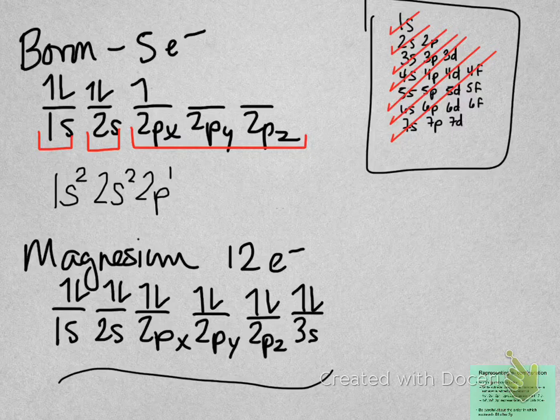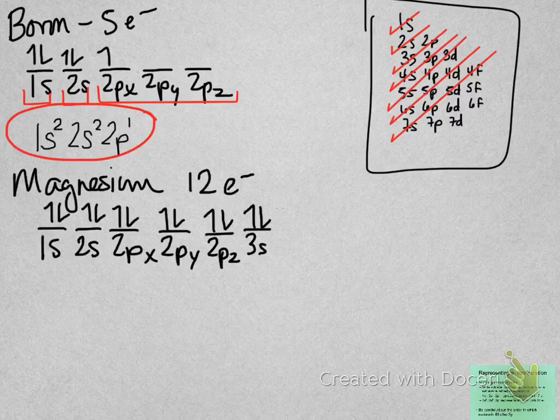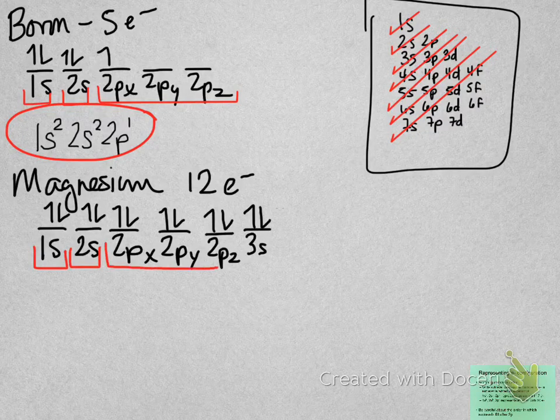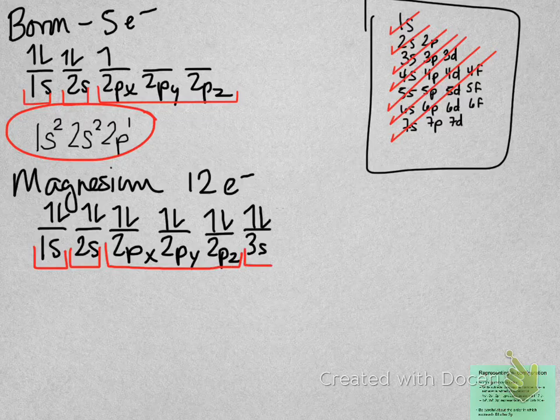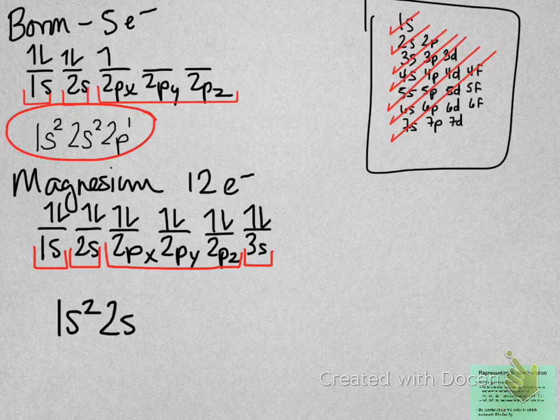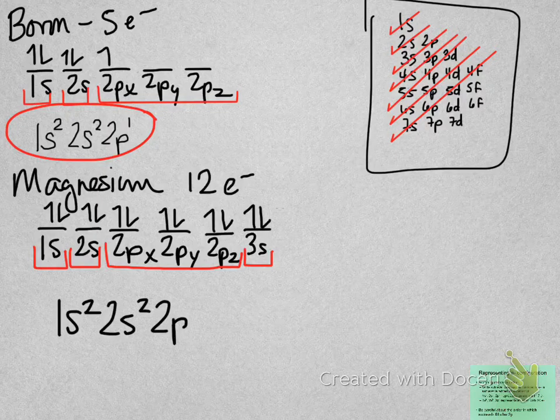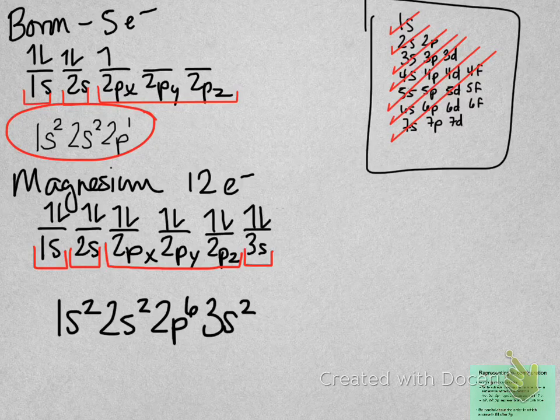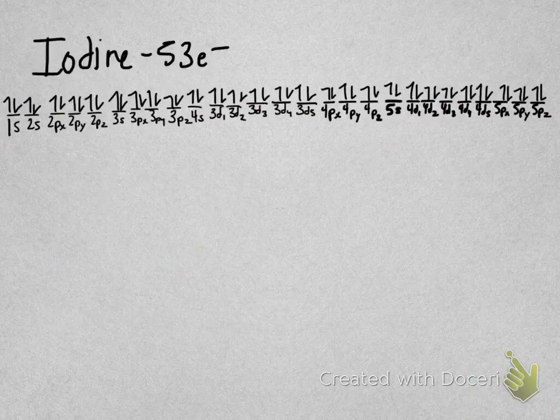Let's do the electron configuration notation for magnesium. So for magnesium, I'm going to look and see that there's my 1s, there's my 2s, there's my 2p, and there's my 3s. So when I write this in electron configuration notation, I'll write 1s2, 2s2, 2p6, 3s2. That's it. Boy, that's a whole lot easier.